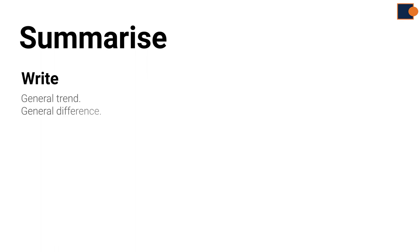Part 3: Writing an overview. Basically, an overview is all about summarizing information by stating the general trends or main differences.